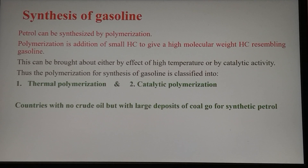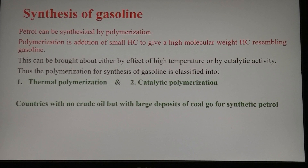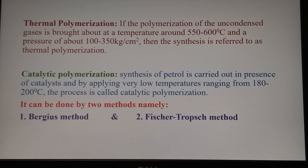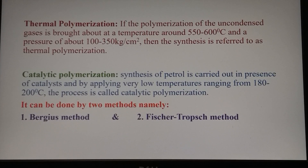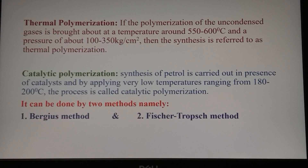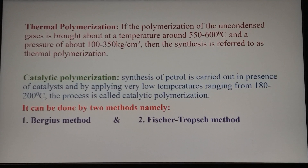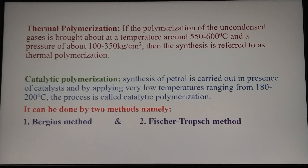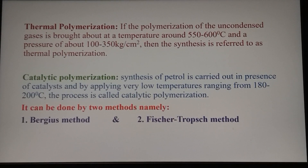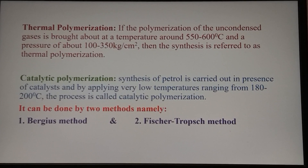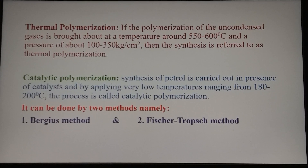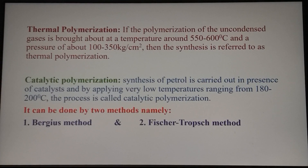Polymerization can be categorized into thermal polymerization or catalytic polymerization. Thermal polymerization is carried out at a high temperature of around 550 to 600 degrees Celsius and a pressure of about 100 to 350 kilograms per centimeter square. In catalytic polymerization, the temperature is quite low, in the range of 180 to 200 degrees centigrade, and pressure is also very low, around 1 to 10 kilograms per centimeter square.